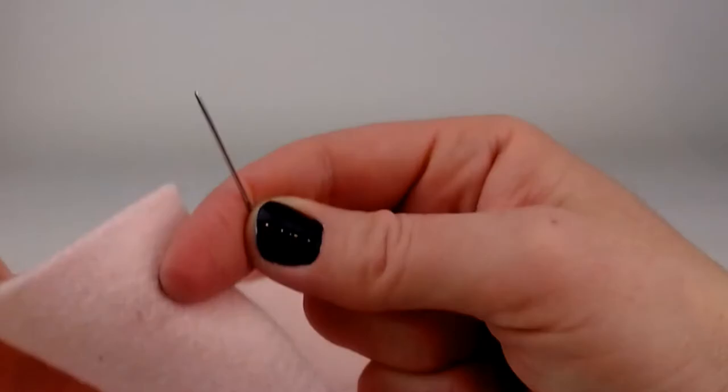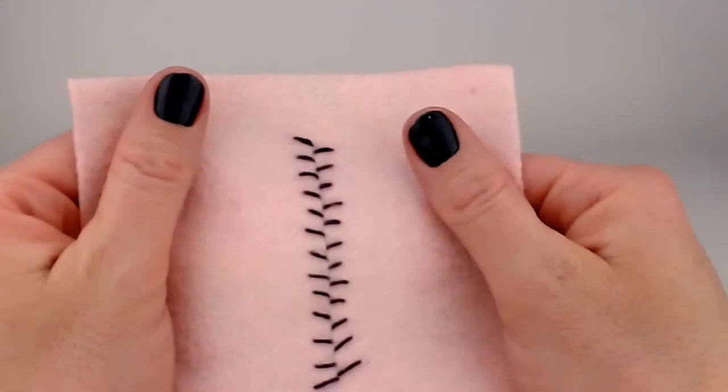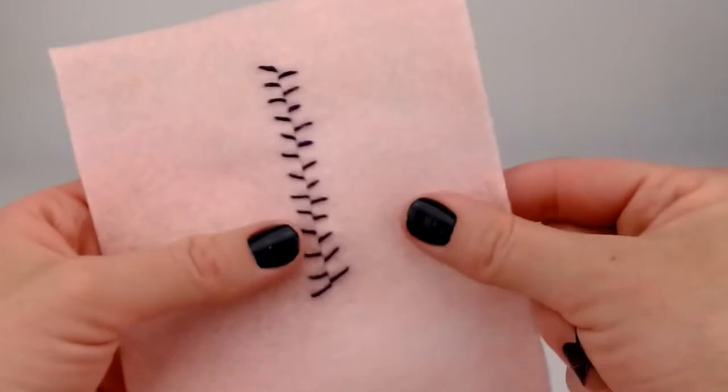Right now we're going to talk about the baseball stitch. Does this look familiar to you? I mean if it were red and straight and on a leather ball. So this is a great stitch for bringing together two sides.